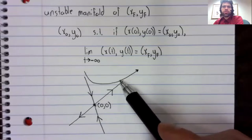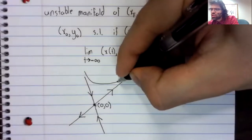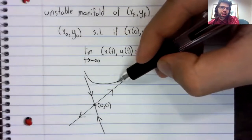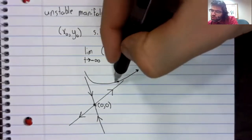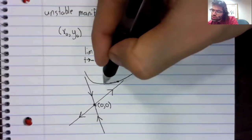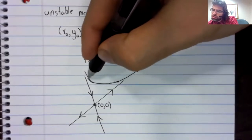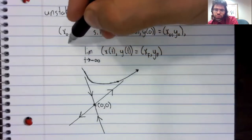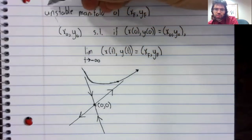Because if you have a point on this trajectory, say you start here, and you reverse time, you do not converge to the origin. You go up this way.